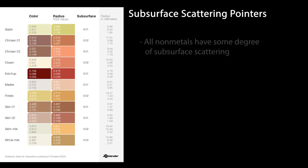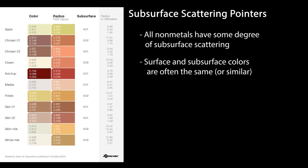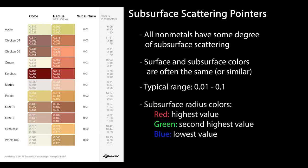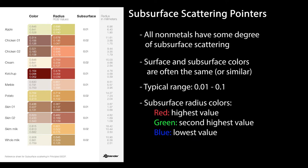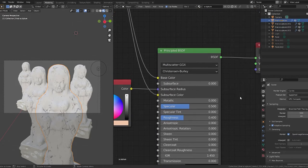Nearly all nonmetals exhibit some degree of subsurface scattering. Surface and subsurface colors are almost always the same. In real-world cases, subsurface ranges between 0.01 and 0.1. And also in real-world cases, subsurface radius colors conform to the absorption qualities of visible light — this means red, the color less likely to be absorbed, will be the highest value, followed by green and then blue. That was probably more than you ever wanted to know about subsurface scattering, but there's one more thing to discuss: distribution options.